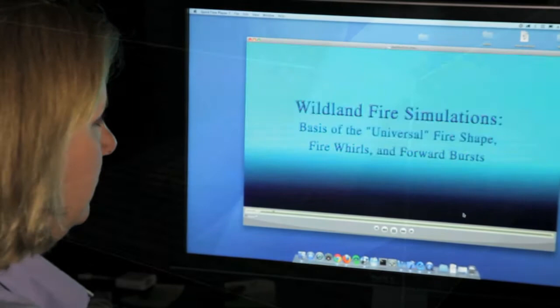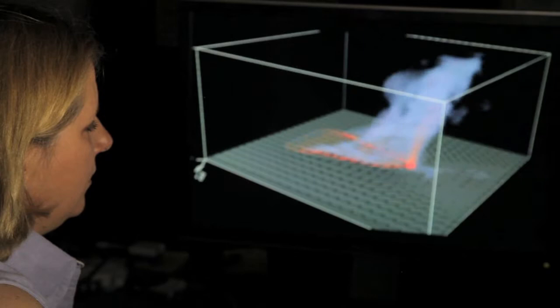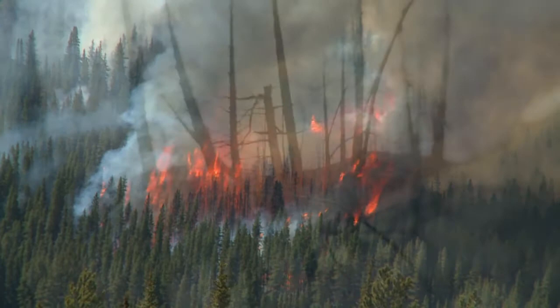We use the supercomputers to ensure we can run our models faster than real time. These models are very complicated. They involve a weather model that's tied to a fire model. When these two are connected, you can predict where the fire is going to go, how it modifies the weather, and how that feeds back on the fire behavior.